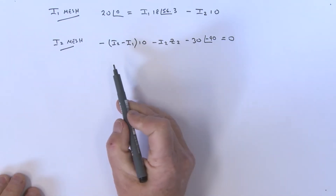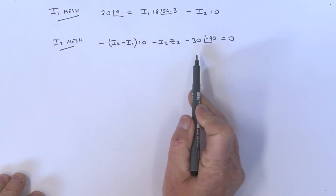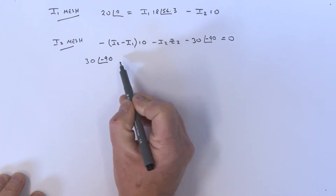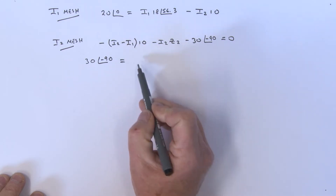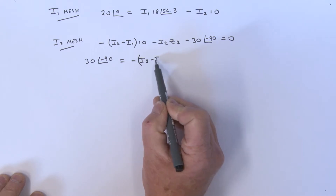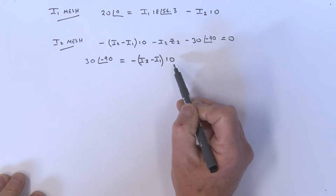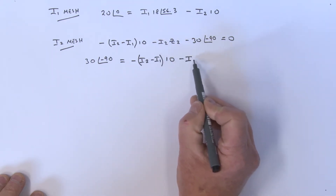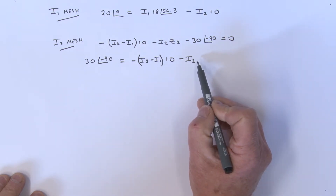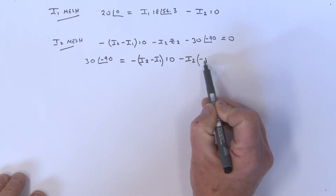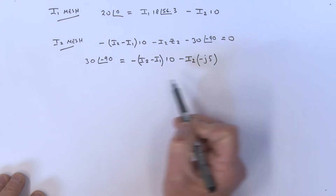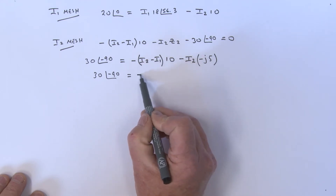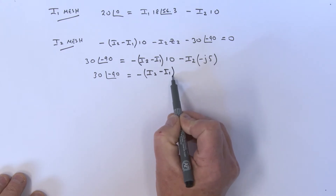Now working on the I2 mesh current equation, let's simplify. Taking the source term to the other side: 30 angle minus 90 equals minus bracket I2 minus I1 times 10, plus minus I2 times Z2. Z2, if you remember, is minus J5. So we have 30 angle minus 90 equals that times 10, and this becomes plus I2 times J5.